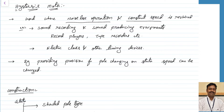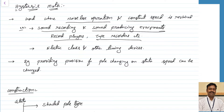Some of the applications are sound recording and sound producing equipment such as record players and tape recorders, where the noise of the motor should not be there. Only we have to hear the sound coming from outside; the motor should not produce any type of sound. Similar applications are electric clocks and timing devices where silent operation is required. The limitation is the machine size will be very small rating — high rating machines are not possible because the cost increases drastically.